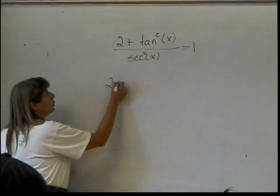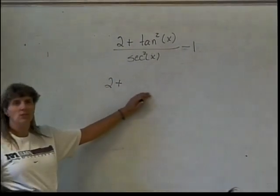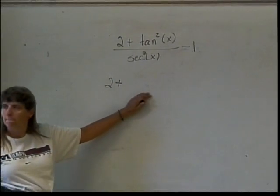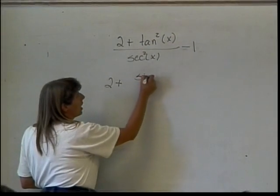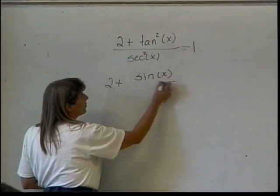This will then become 2 plus... Well, if I change my tangent, what will it become? So, the tangent is the sine of x divided by the cosine of x.